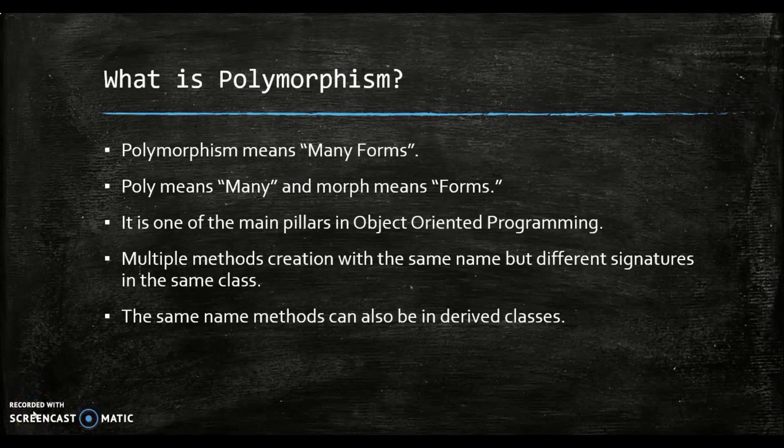Polymorphism is the method in an object-oriented programming language that performs different things as per the object class which calls it. With polymorphism, a message is sent to multiple class objects, and every object responds appropriately according to the properties of the class. As the word suggests, polymorphism means many, and morph means forms.